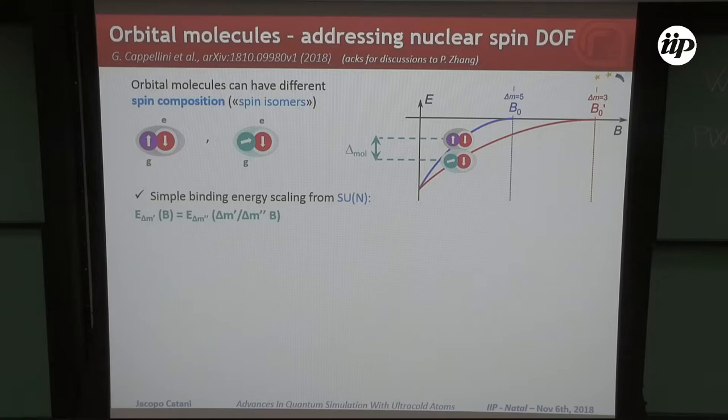Molecules can be created or at least can exist in different spin configurations. They are sort of spin isomers, and they rely on different binding energy branches. The reason is that, as I showed you in the orbital Feshbach resonance slide, the orbital Feshbach resonance center just depends on the particular spin arrangement you are dealing with. But the point is that the underlying SU(N) symmetry gives you an easy way of retrieving one binding energy once you know the other because you can just use the rescaled form for the magnetic field exactly as we did for the position of the centers.